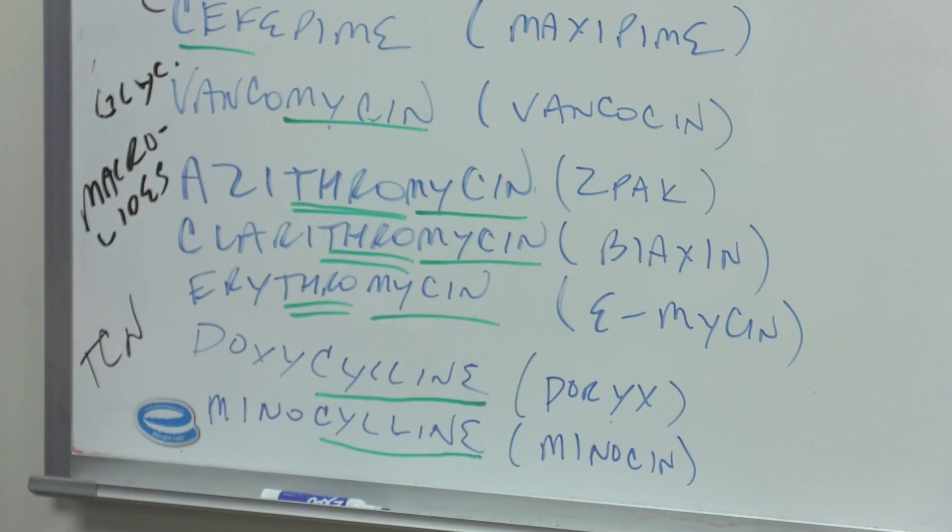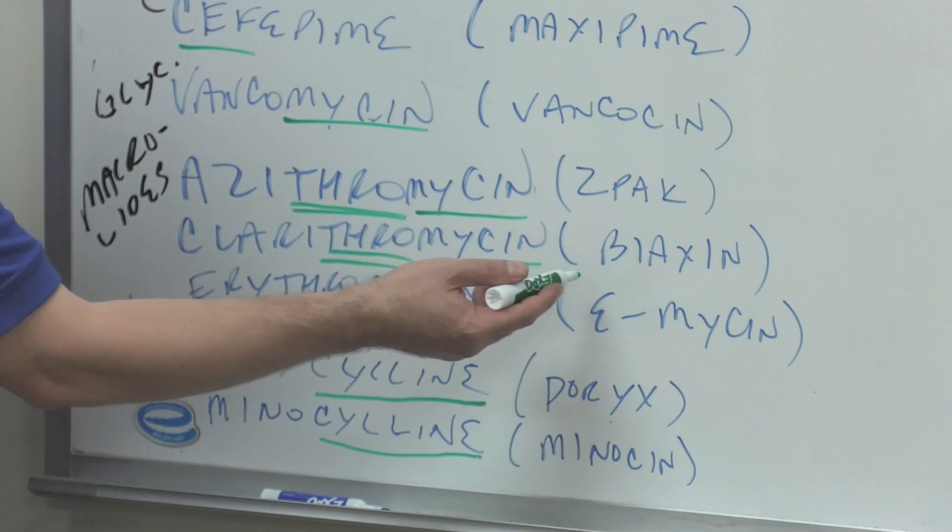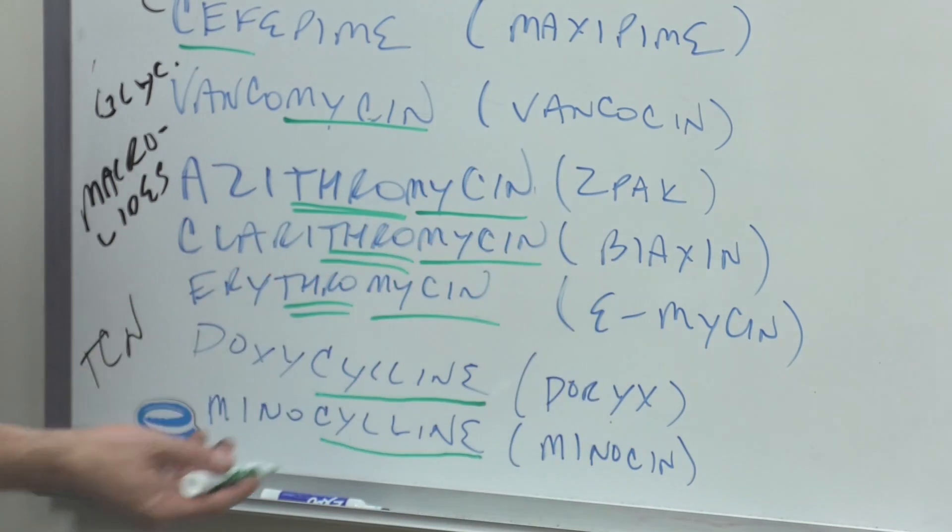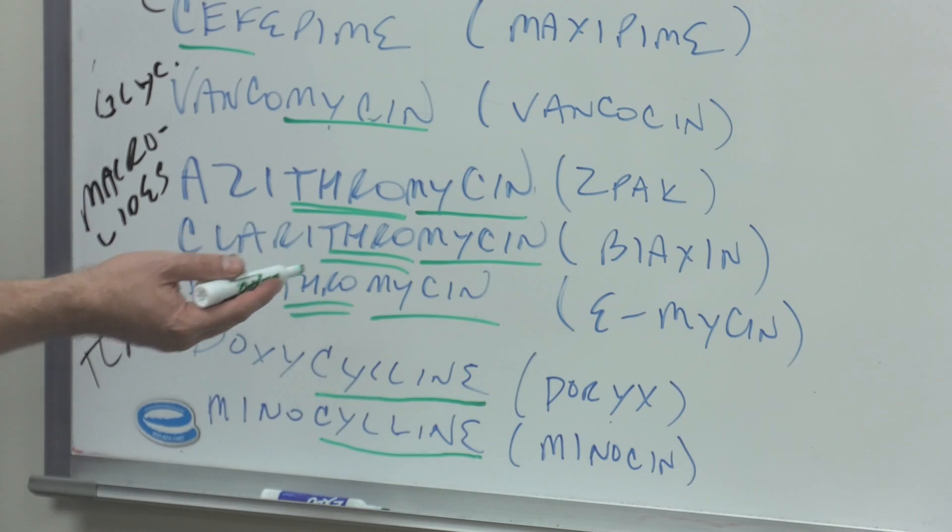Azithromycin is a Z-Pak. The way that I order it is you only take that one once daily. Clarithromycin you take twice daily, so once daily then twice daily—Biaxin twice daily. Then erythromycin is taken four times daily. I put this in order by number of doses a patient would have to take per day: one, two, and four.